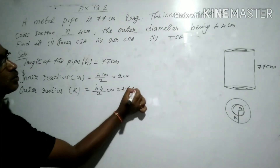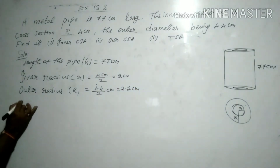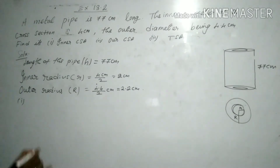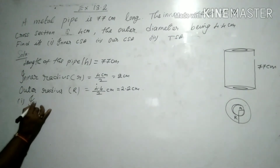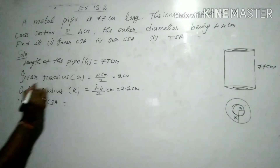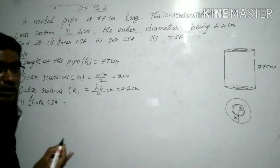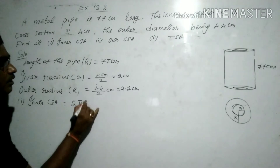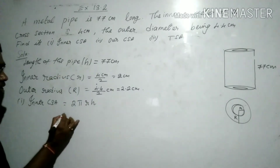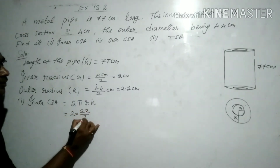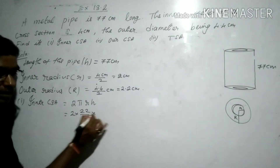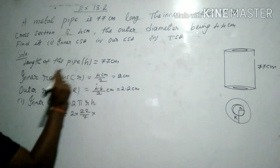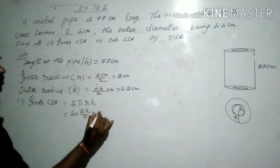The first part requires us to find the inner curved surface area (CSA). The formula for CSA of a cylinder is 2πrh. So: 2 × (22/7) × inner radius × height. The inner radius is 2 centimeters and the height is 77 centimeters.